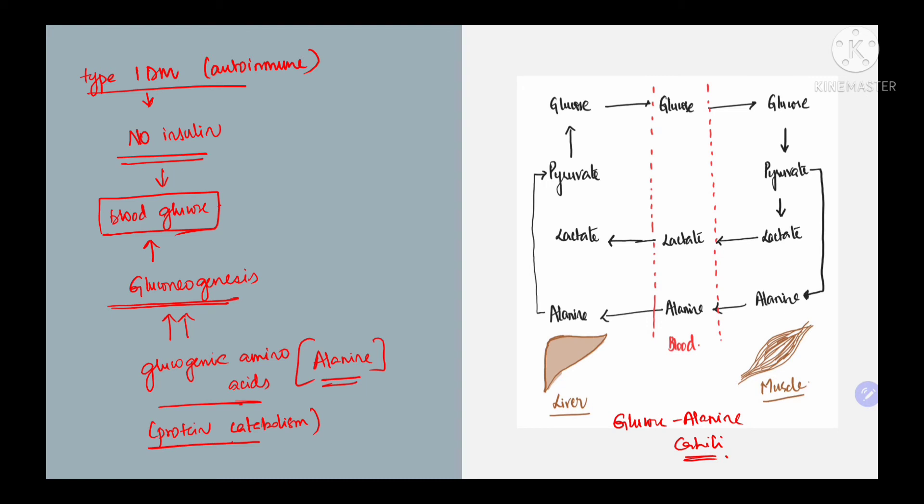The amino acids from the muscle are degraded or catabolized, absorbed into the blood, and then reach the liver where they are converted into pyruvate and then utilized for gluconeogenesis to be converted into glucose.